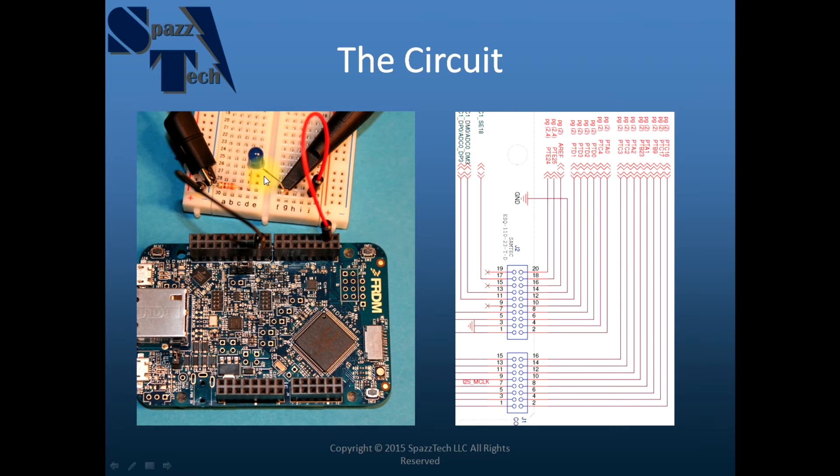So in this video we're just going to measure how fast this is toggling. That will give us an idea that if we go ahead and use the Kinesis Design Studio and Processor Expert to use the high level code that's generated there, it will give us an idea of how fast we can possibly cycle through a loop and how many things we can accomplish with this hardware. So let's go ahead and switch over to the oscilloscope and take that measurement.